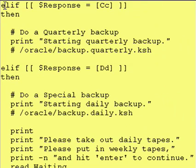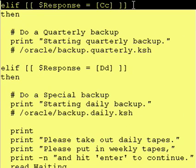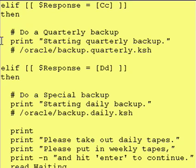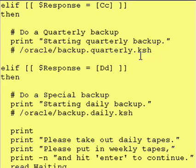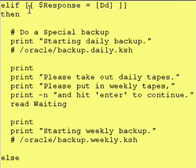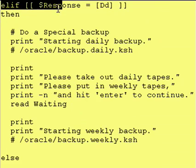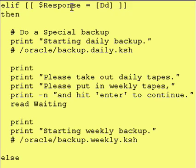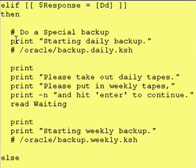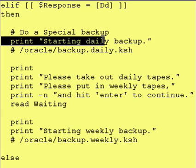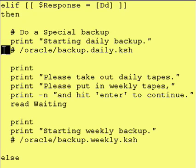However, if it's false, we check to see if the value was a C. If it was a C, we let the user know we're starting quarterly backup, and then we'd execute our quarterly backup. However, if none of those were true, then we check to see if the value within response is an uppercase or lowercase D. If it is, then we say we're going to do our special backup, and the special backup in this case consists of a daily backup — so we print 'starting daily backup' and do our daily backup.